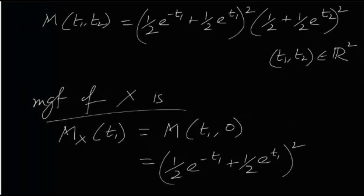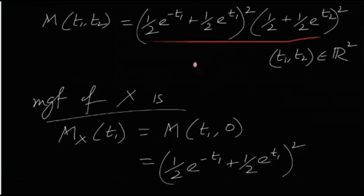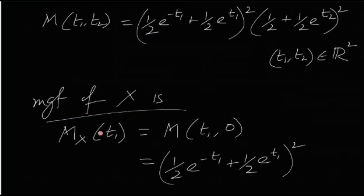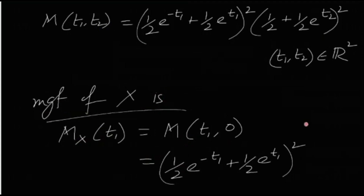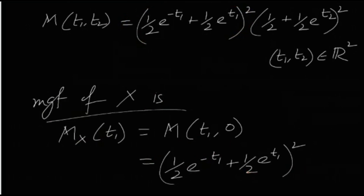M(t1, t2) is given. The MGF of X alone is found by putting 0 in place of t2. So M_X(t1) = M(t1, 0), which gives us just this part: (1/2 · e^(−t1) + 1/2 · e^(t1))².